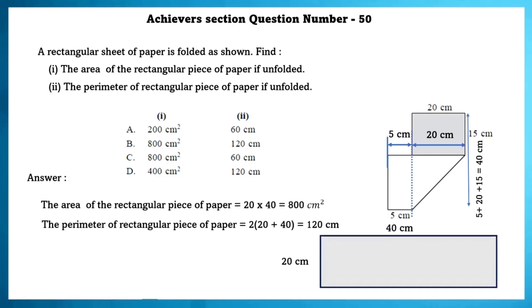And perimeter of the rectangular piece of paper is equal to 120 centimetres.